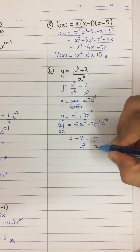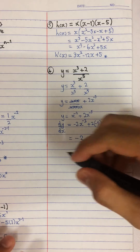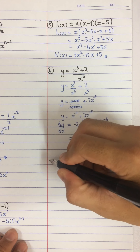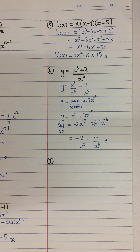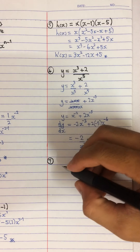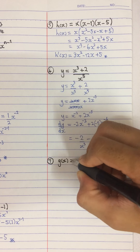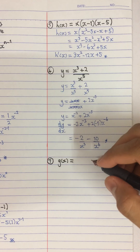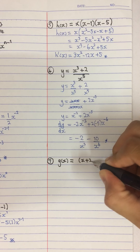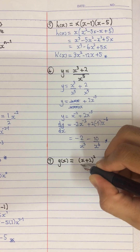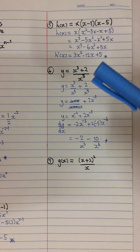Now applying the concept of first derivative: bring power down. 1 over 2 stays as 1 over 2, and you bring negative 2 down, so you have negative 2 times that. Subtract 1 from the power: negative 2 minus 1. Simplifying: 2 divided by 2 is 1, so you have negative 1, and then x to the power of negative 3. You can change back to fraction: negative 1 over x to the power of 3.